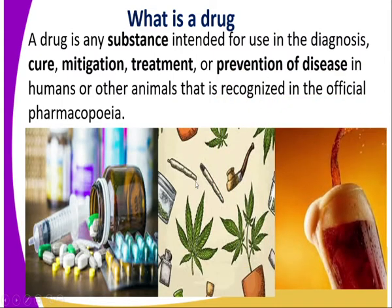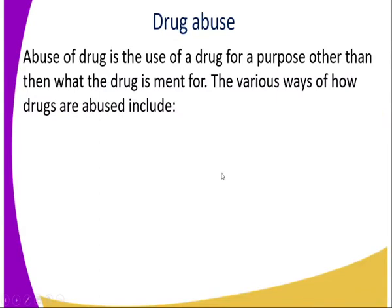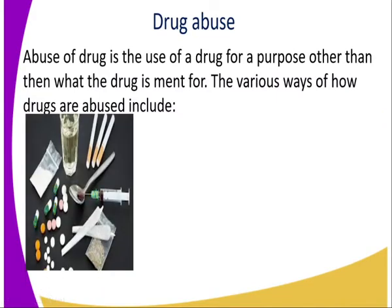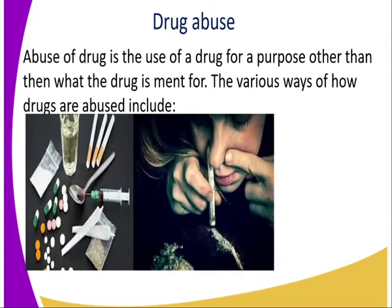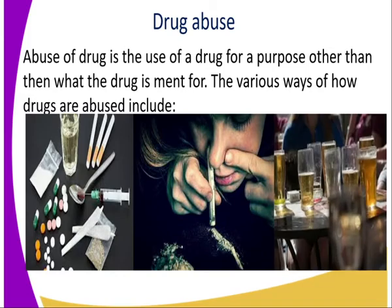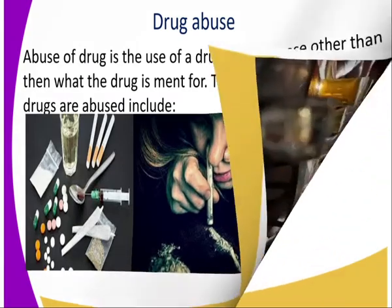What about drug abuse? It is the use of a drug for a purpose other than what it is meant for. The various ways through which it is abused include cigarettes, where tobacco is abused. There are different ways through which these drugs have been used in the wrong way by humans. From the diagrams shown, they can self-explain what drug abuse is.